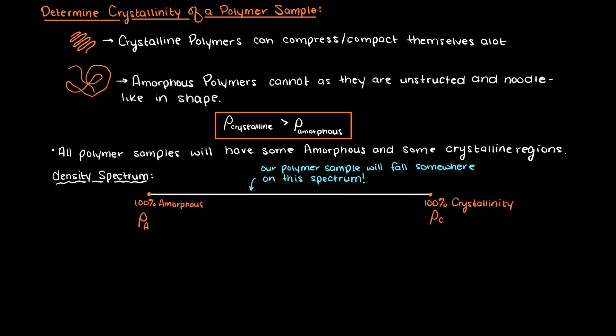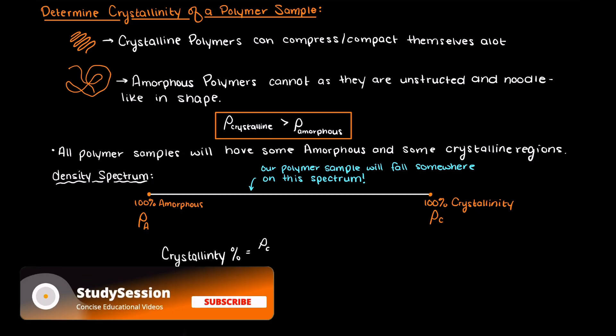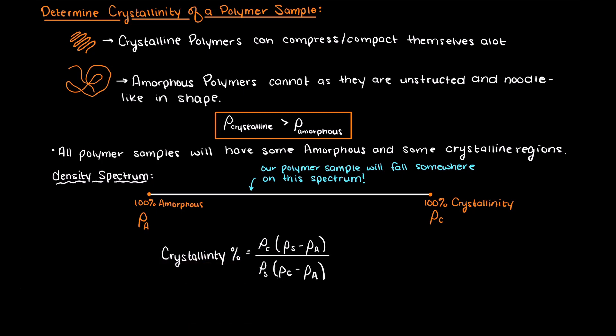Well, a formula we can use to determine the percentage crystallinity of a polymer sample is presented here. We have the density of a hypothetically pure crystalline polymer times the difference in our polymer sample's real density minus the hypothetical 100% amorphous density, which is all divided by the density of our sample times the difference in our two hypothetical densities. Now obviously we can only use this equation if we have sufficient information about our polymer's density.